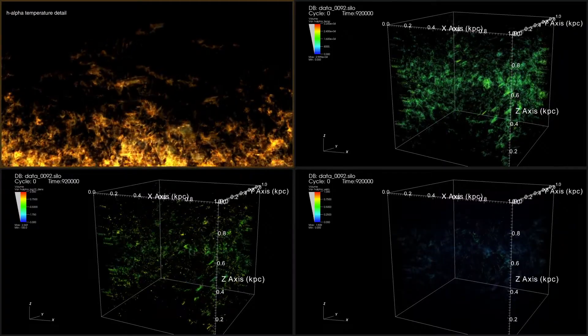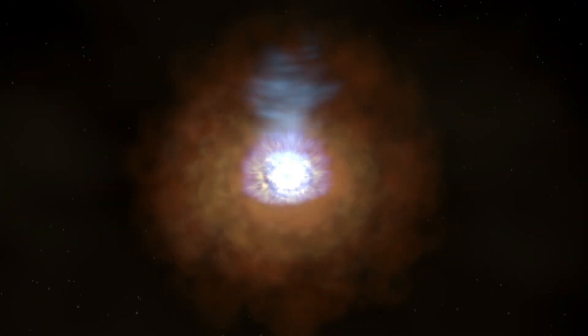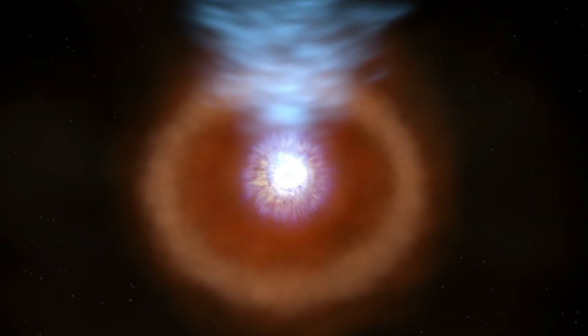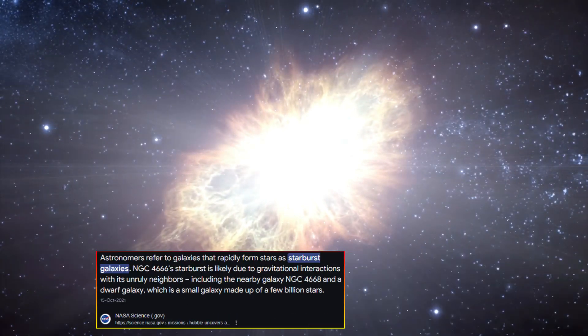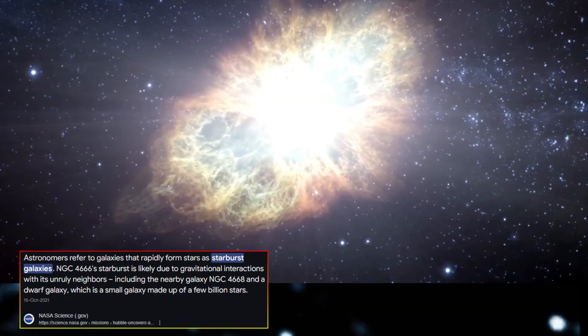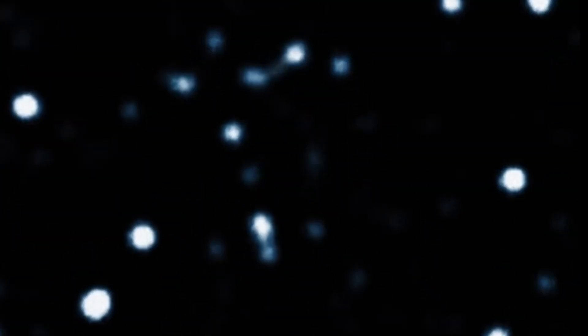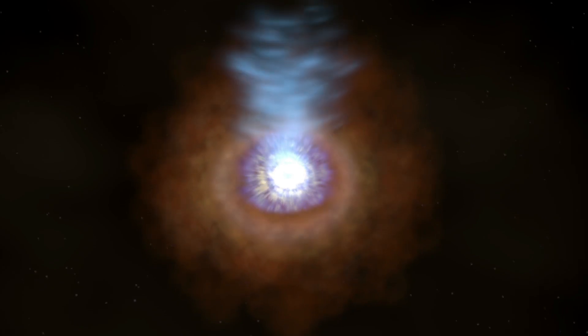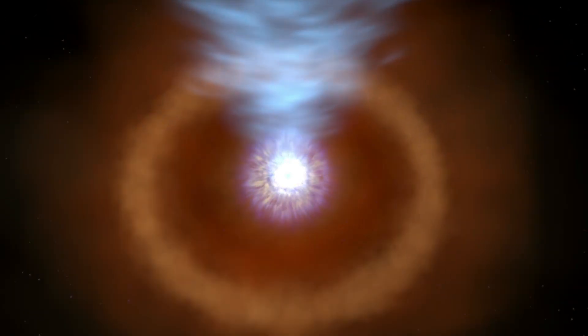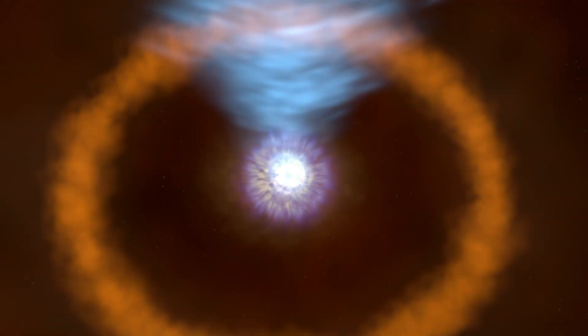The starburst driven winds theory. An alternative explanation is that an intense period of star formation near the center of the Milky Way triggered a wave of supernova explosions. In this scenario, a burst of rapid star formation, known as a starburst, could have resulted in multiple massive stars reaching the end of their lives in quick succession. The energy from these supernovae could have generated powerful winds, pushing gas and particles outward and creating the enormous bubbles.